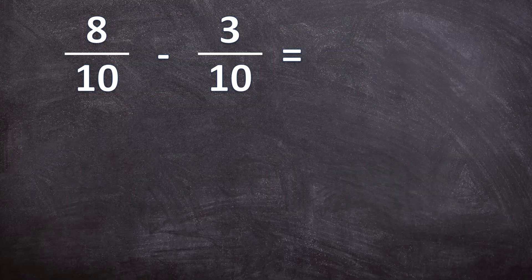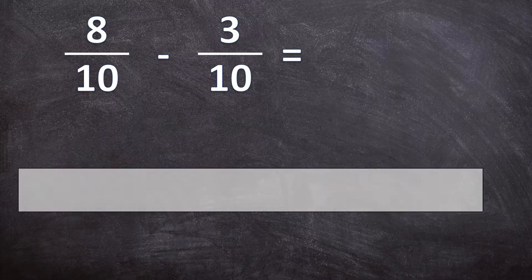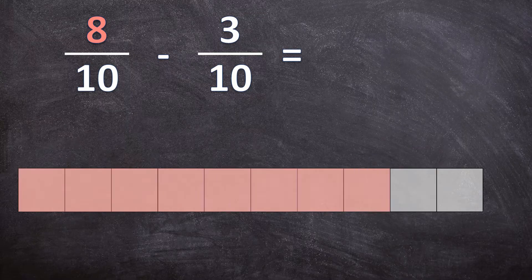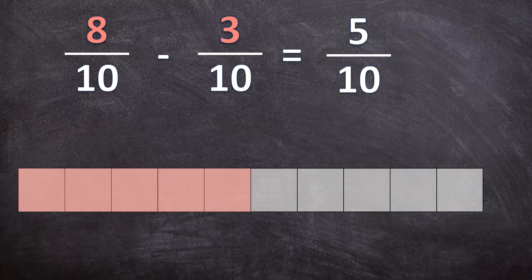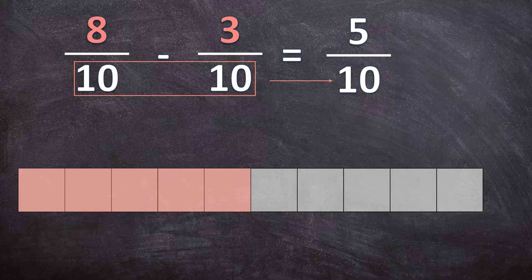Let's have another example. Here we have 8 over 10 minus 3 over 10. Our denominators are the same, so we draw a rectangle divided into 10 equal pieces. For the first fraction, we color in 8 of the 10 pieces. Then we subtract 3 of those pieces — we take 3 away rather than adding more. Our answer is 5 over 10, with 5 of the 10 pieces still colored in. We can see the denominator stays the same, and we subtract 3 from 8 to get our numerator. But this is not our final answer — we still need to simplify.